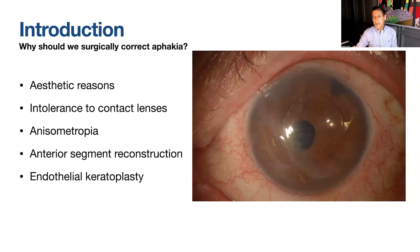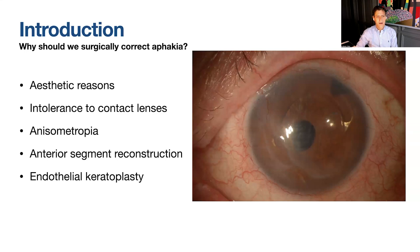We always try to fit aphakic patients with contact lenses, but fitting contact lenses in elderly patients is cumbersome — many have difficulty putting them in or removing them, and if they have dry eye they may become intolerant. Anisometropia is another cause: if only one eye didn't receive an implant, patients won't tolerate a high-plus lens in one eye with a lower prescription in the other.